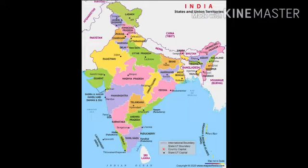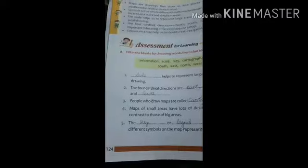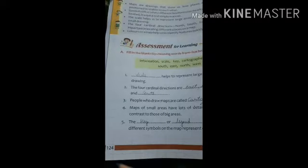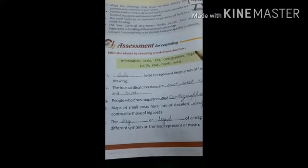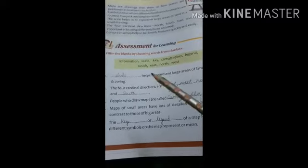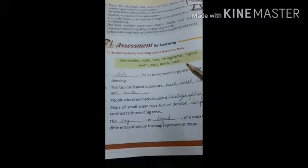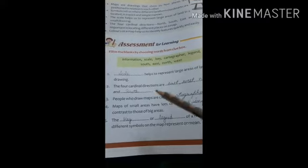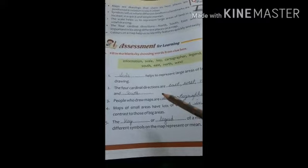So, this chapter is over. Now we will do some book work. Open page number 124. Here, fill in the blanks by choosing words from the clue box. The clues are given — you just choose the correct words and fill in the blanks.